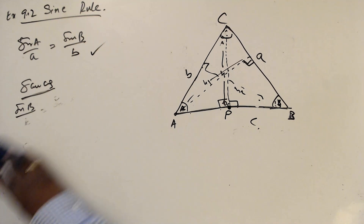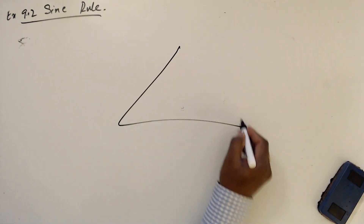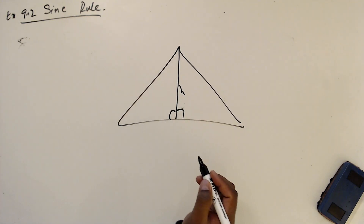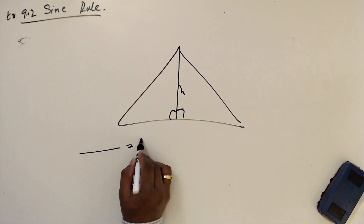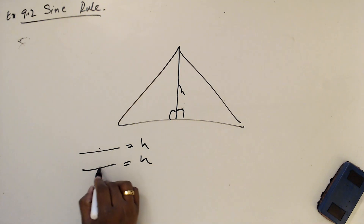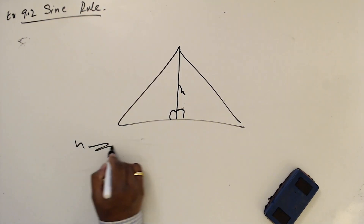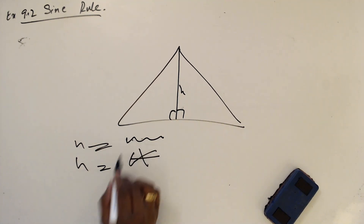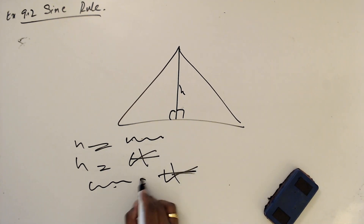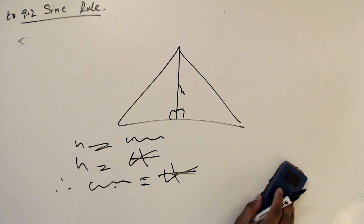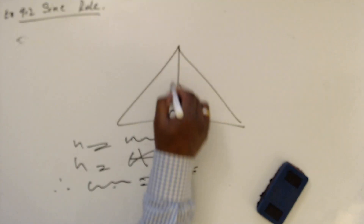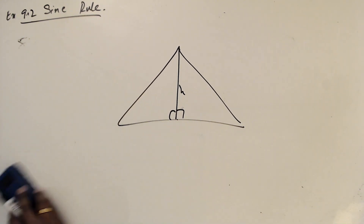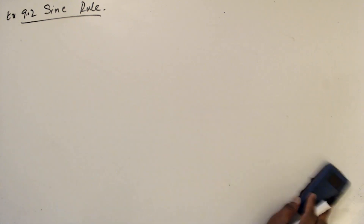As a summary, when you prove the sine rule: if you have a triangle, all you need to do is draw a perpendicular line, take that height as H, write two equations for H, and then equate them. H equals one expression, H equals another expression — therefore those two expressions are equal. That is all you need to keep in your mind.